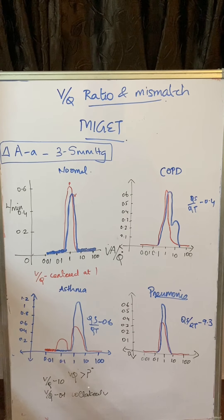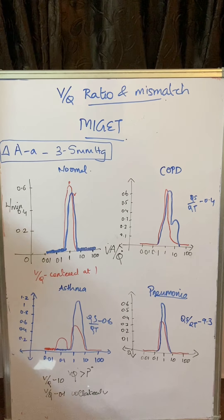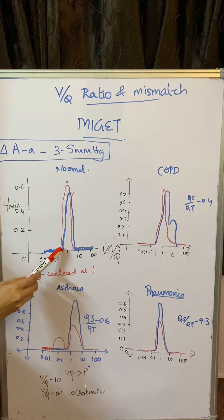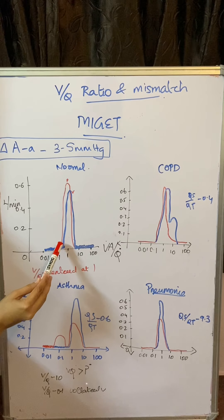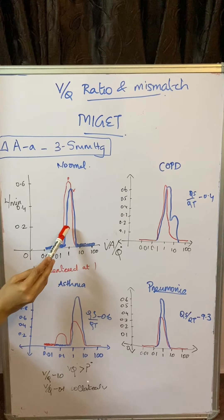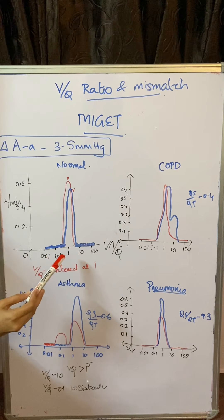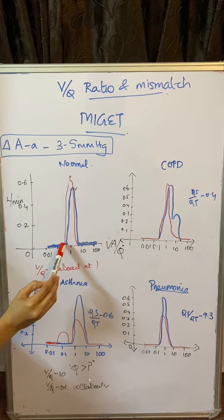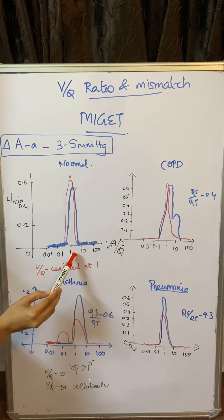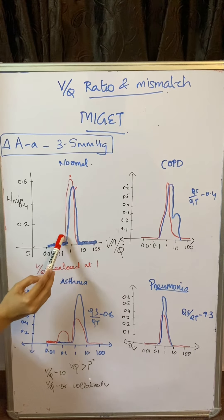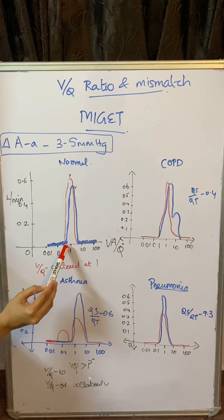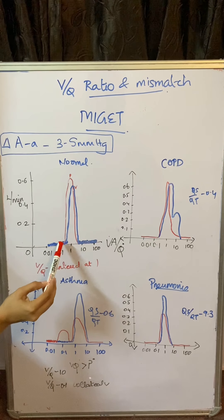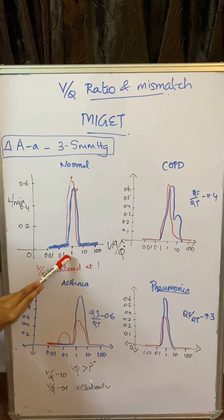In the MIGET diagram showing normal ventilation perfusion distribution, the blue line shows ventilation and the red line shows perfusion. Blood flow is happening along the ventilation curve and the ratio is centered around 1 — they are almost matching. There is some mismatch in the region where the ventilation perfusion ratio is less than 0.1, where there is more perfusion and less ventilation, and in the region greater than 1 where there is more ventilation than perfusion. Overall this is the normal ventilation perfusion ratio.